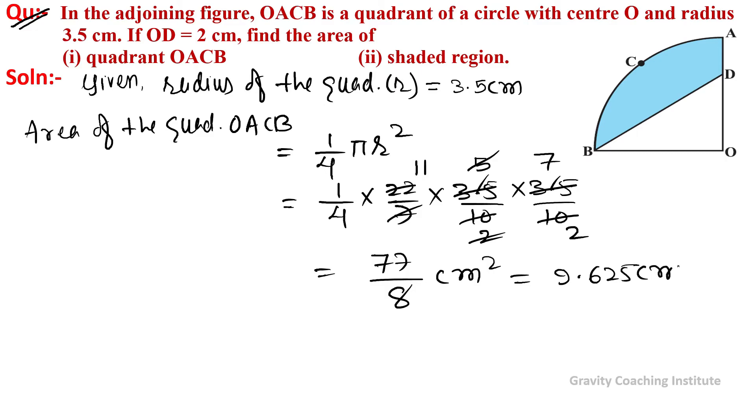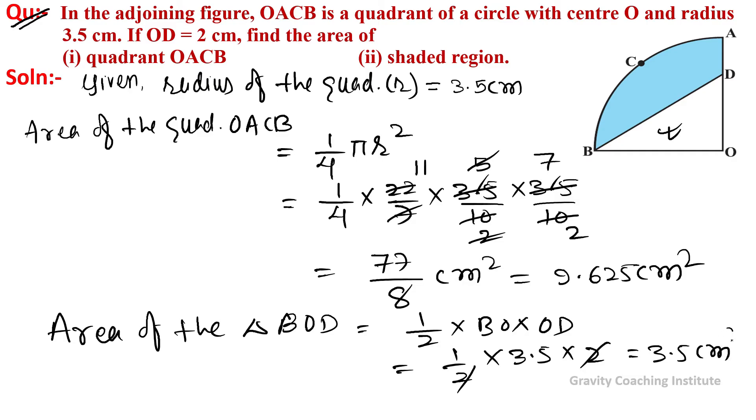Now we find the area of the triangle. Area of triangle BOD equals half into base into altitude, which is 1 upon 2 into BO value 3.5 into 2. Canceling 2, this equals 3.5 centimeter square.